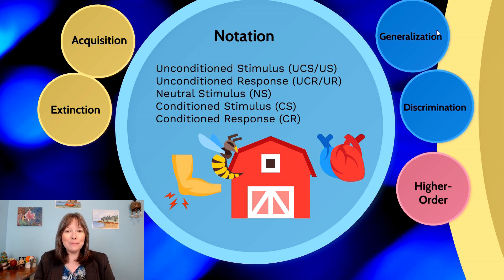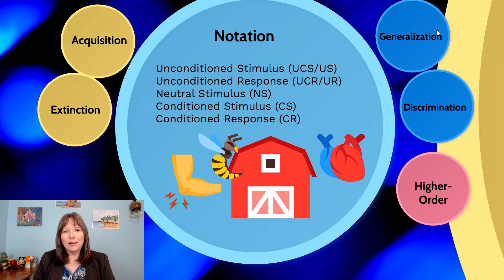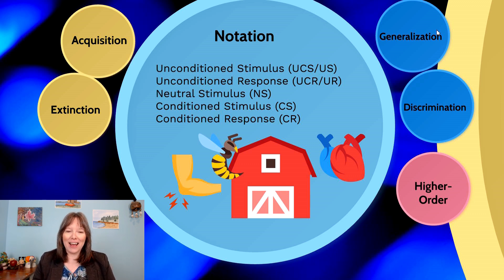We also have an unconditioned response (UCR or UR). In the dog example, that's drooling to meat — you don't need to train it. In the hornet sting example, the unconditioned response would be the pain response in our body, which might also make our heart speed up, make us cry, or trigger a fight-or-flight reflex. We don't need to experience it multiple times; the first time we're stung by a wasp, even if we don't know what a wasp is, our body will have that reflex.